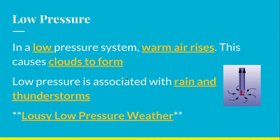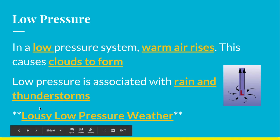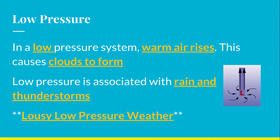We're going to contrast that to a low pressure system. In low pressure, warm air rises. Remember, warm air likes to spread out so it's not all close together. The air rises, and whenever air rises, that's when clouds form. And clouds are what bring weather to us — weather in the form of rain, thunderstorms, snow, and just yucky stuff like that. So low pressure is lousy, or bad weather. Hooray, high pressure is fair weather. Lousy low pressure is going to be weather that is not so fun — like last week when it rained nonstop, that was a low pressure. This week it's nice and sunny — high pressure.